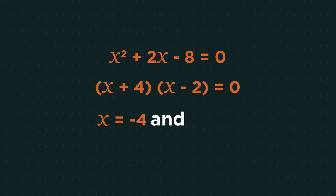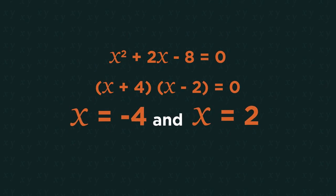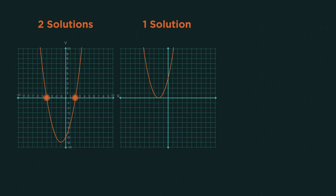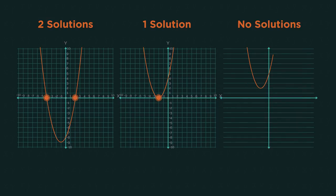Solving just means to find values of x that satisfy the quadratic. Usually there will be two solutions, but sometimes there is just one, and sometimes there are no solutions. The solutions are also known as roots.